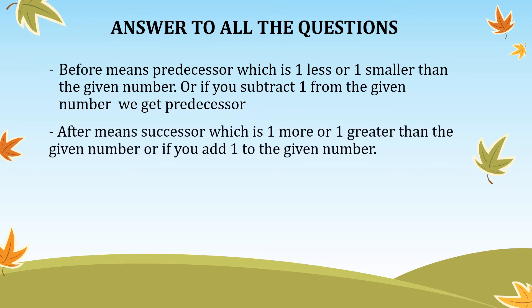After means successor, which is one more or one greater than the given number. If you add one to the given number, you get the successor. For example, if the given number is 2, then before 2 is 1 — because we subtract 1. And after 2 is 3 — because we add 1 to the given number.